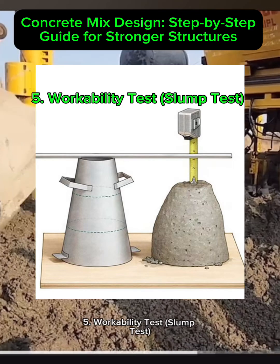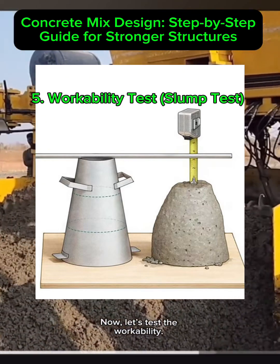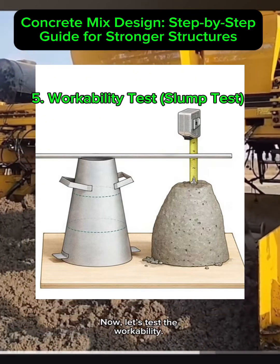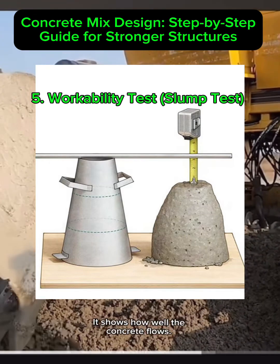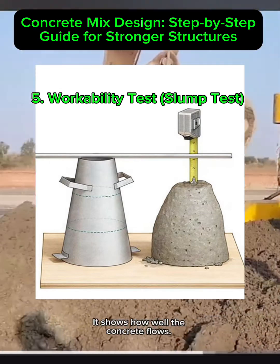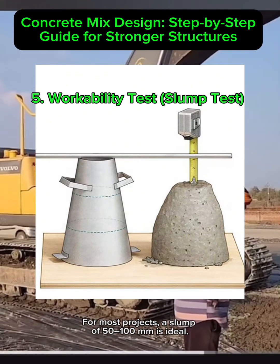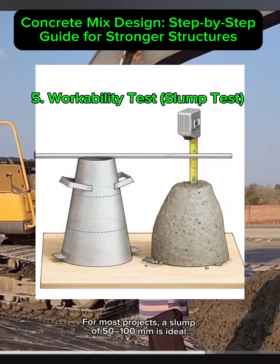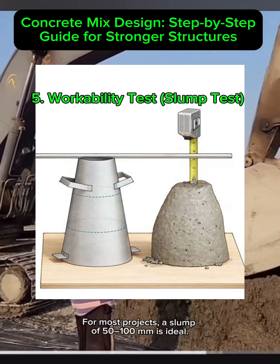Step 5: Workability test — the slump test. Let's test the workability. This is called a slump test; it shows how well the concrete flows. For most projects, a slump of 50 to 100 millimeters is ideal.